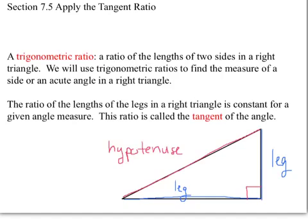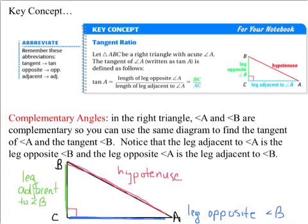The trigonometric ratio is the ratio between two sides of a given angle. Our key concept: tangent. If we look at triangle ABC, it's a right triangle with acute angle A. The tangent of A, written as tan A, is defined as the length of the leg opposite angle A over the length of the leg adjacent to angle A. So tan of A is opposite over adjacent — we would do BC over AC.